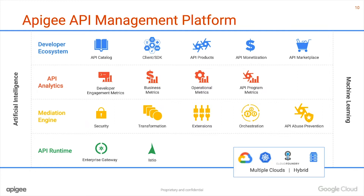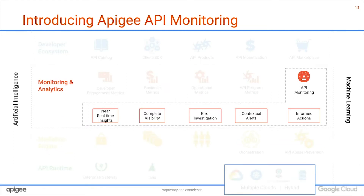Although the API analytics platform has been very useful, it is purpose-built for trending analytics. So today, we are introducing Apigee API monitoring, which was announced as beta at our recently concluded Google Next conference. It adds a slew of near real-time API monitoring capabilities. It gives you complete visibility into the entire API call chain, the tools to investigate errors very rapidly, set up contextual alerts, and more importantly, take informed decisions and actions.